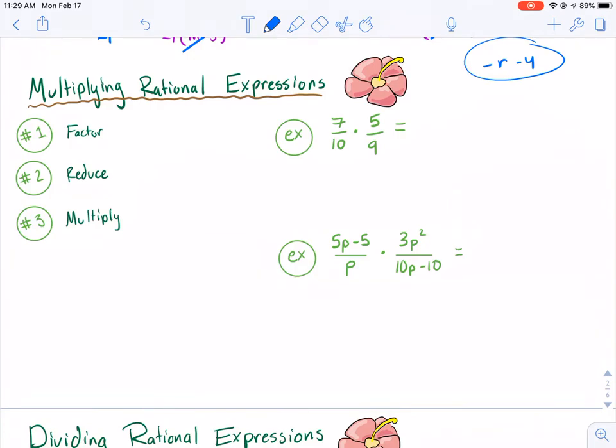So if we're looking at this problem example, it doesn't look like we can factor much, but we can. So we have 7 over, and we can actually factor 10 to its prime factors, which is 5 and 2. And we're going to multiply this by 5.